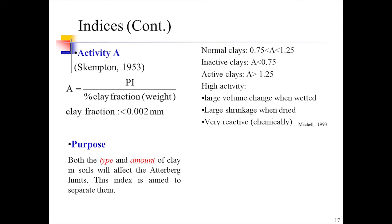Activity index A equals plasticity index by percentage of clay fraction by weight. Clay fraction is less than 0.002 mm. Both type and amount of clay in soils affect the Atterberg limits; this index separates them. Normal clay has A between 0.75 and 1.25. Inactive clay is less than 0.75. Active clay is greater than 1.25.